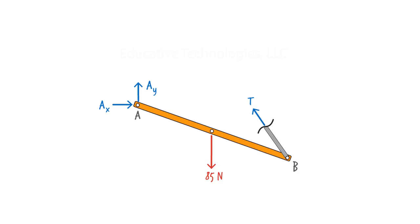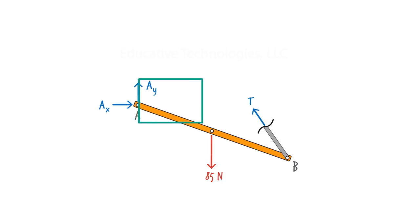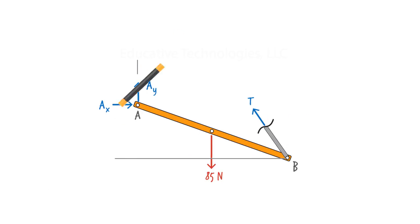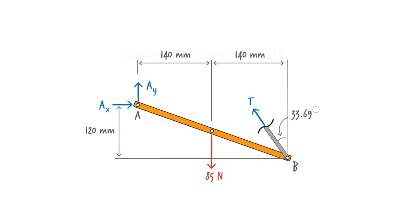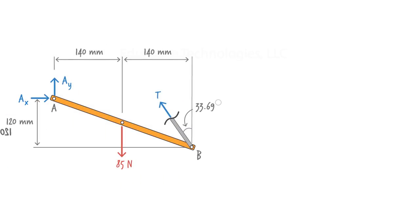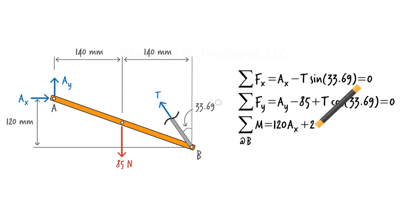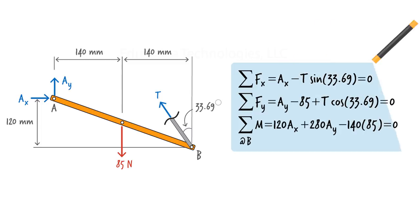Since there is a pin at A, we end up with two forces at the end of the rod — a force in the X direction and one in the Y direction — and we label the tension force in the cable as T. Using the geometry of the system, we can easily determine the angle that the cable makes with the vertical axis; the angle is 33.69 degrees. We complete drawing the free body diagram by showing the relevant distances, and now we can formulate the static equilibrium equations needed for determining the unknown forces.